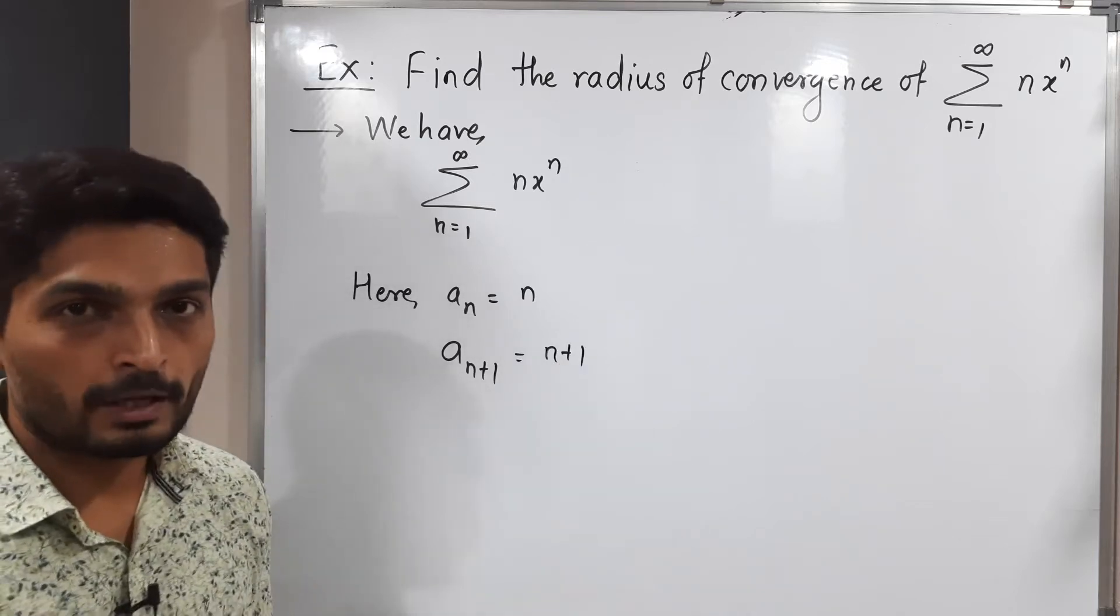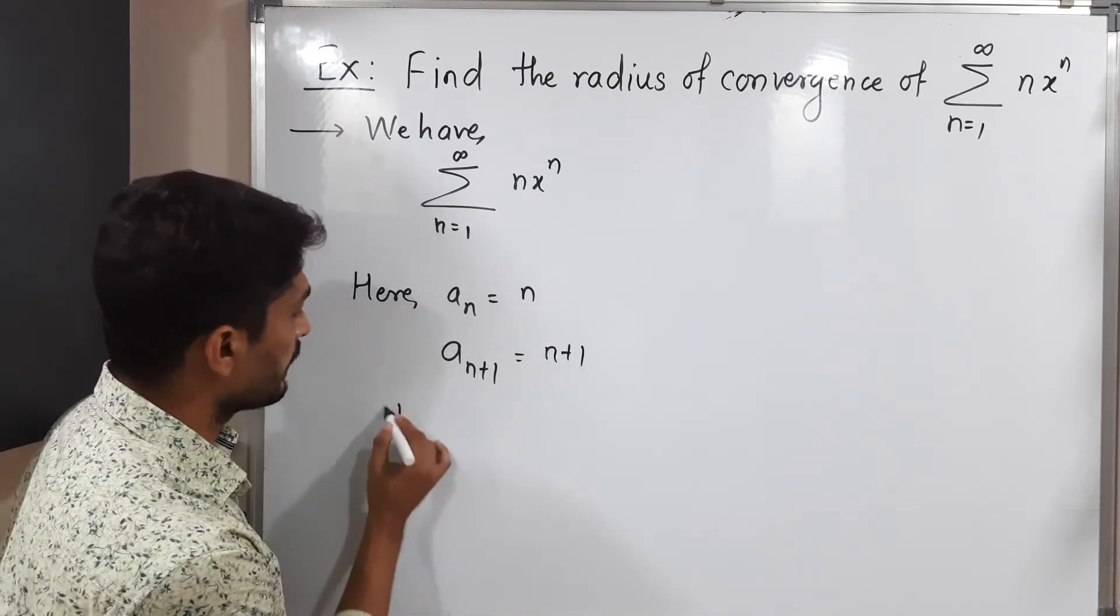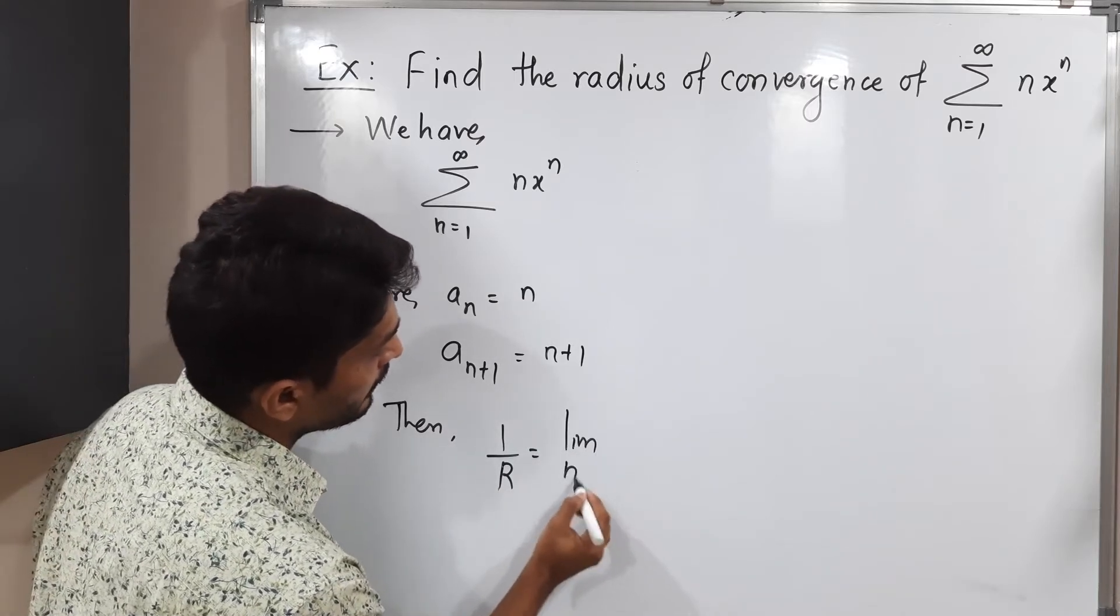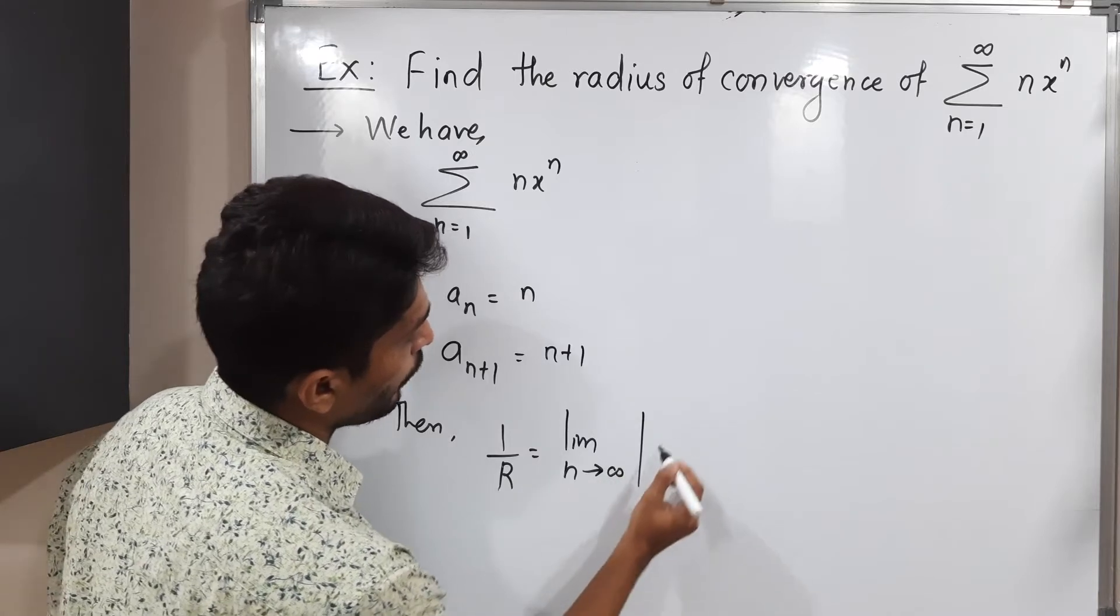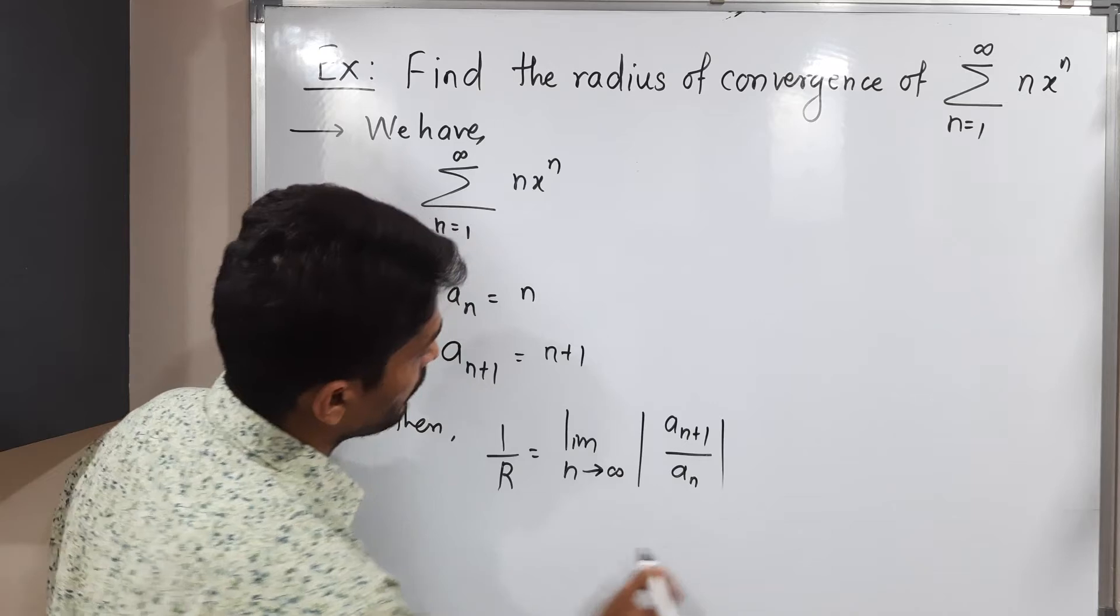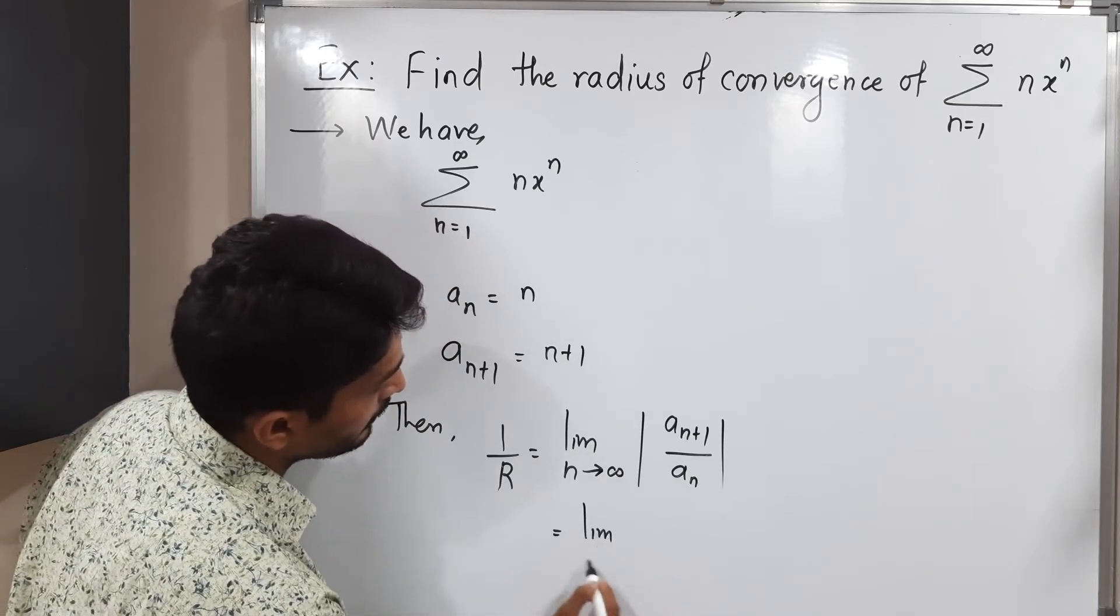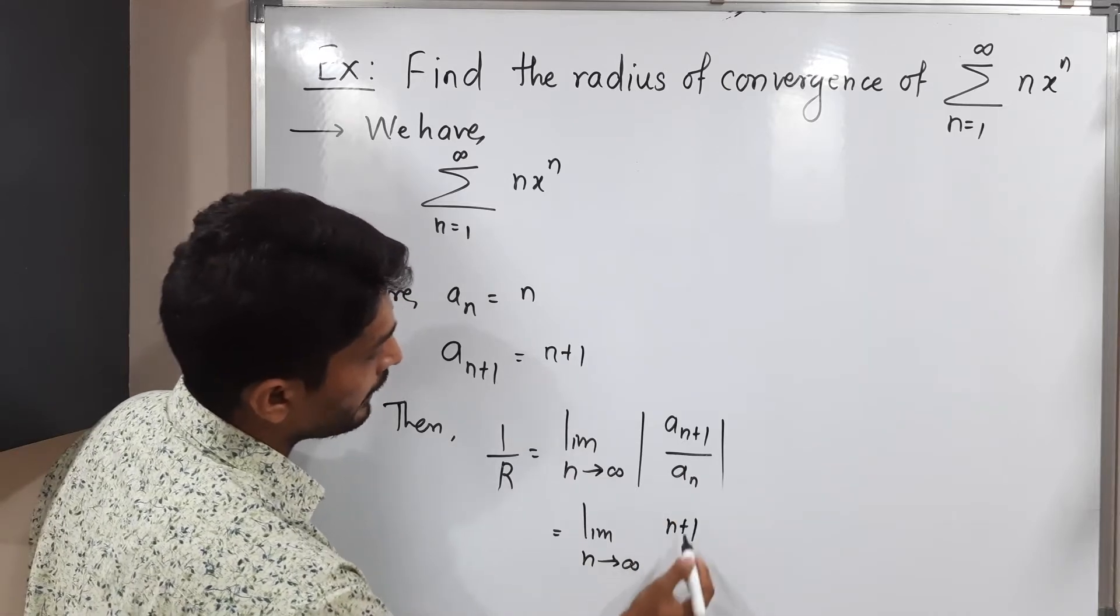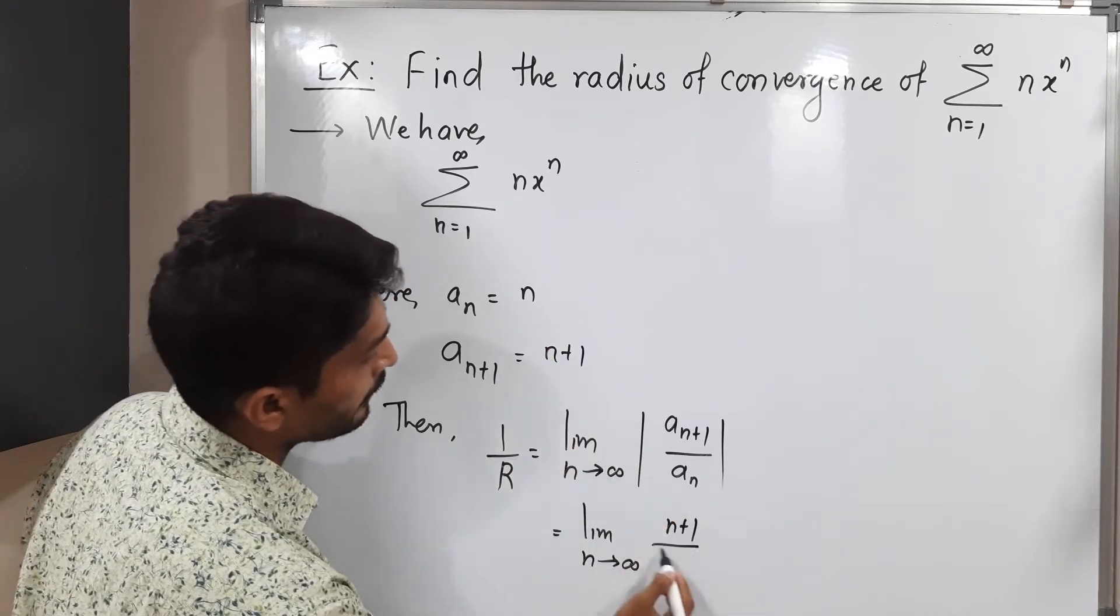So let us use the formula to find radius of convergence. The formula is 1/R equals limit as n tends to infinity of |a_(n+1)/a_n|. So this equals limit as n tends to infinity, where a_(n+1) is n+1 divided by a_n which is n.